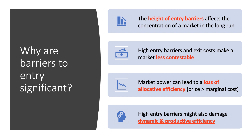A consequence can be that existing firms charge monopoly prices and use their market power to make supernormal profits, leading to a loss of allocative efficiency. There's also thinking that when barriers to entry are high and contestability is low, dynamic and productive efficiency can suffer — there could be X-inefficiencies, diseconomies of scale, and perhaps a slowdown in the pace of innovation.